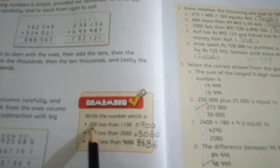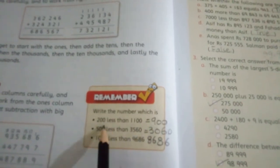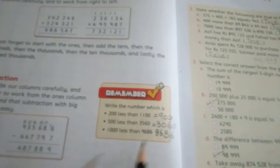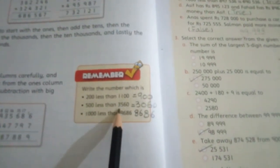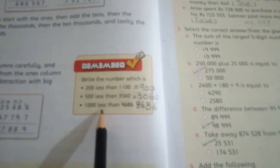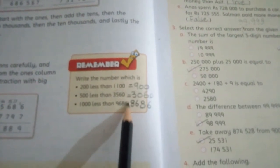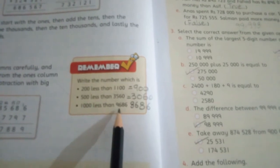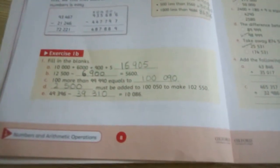Now let's read this. Write the number which is 200 less than 1100. You will subtract and your answer will be 900. Five hundred less than three thousand five hundred sixty. Three thousand five hundred sixty minus five hundred equals three thousand sixty. One thousand less than nine hundred thousand six hundred eighty-six. You will subtract one thousand from eight hundred thousand six hundred eighty-six.